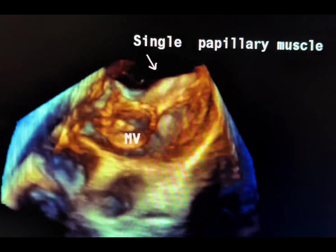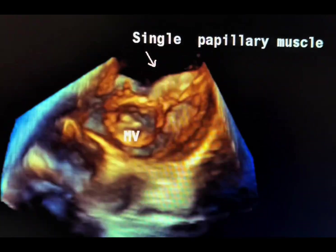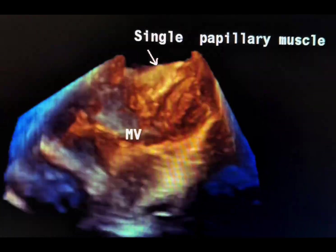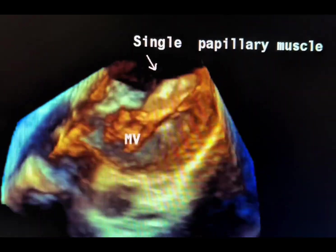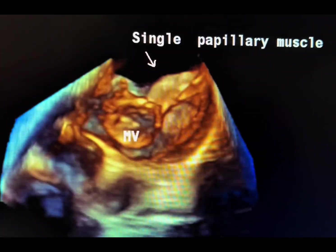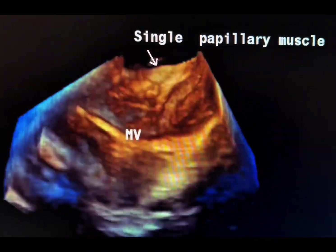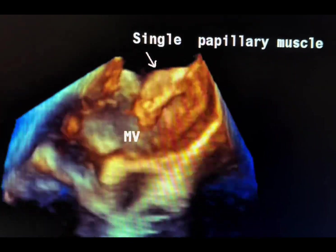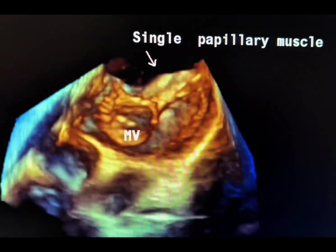This 3D view shows the mitral valve leaflets and a thick single papillary muscle. In parachute mitral valve disease, the other papillary muscle is either absent or underdeveloped, and the restricted leaflet motion results from chordal tethering, in contrast to rheumatic mitral valve disease, where commissural fusion is a major cause.